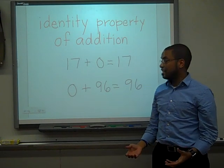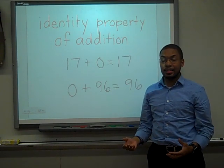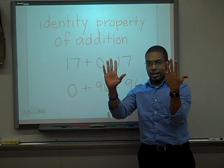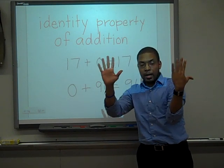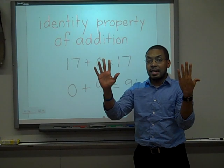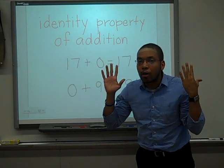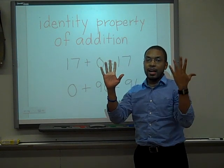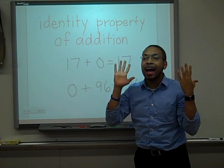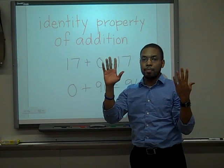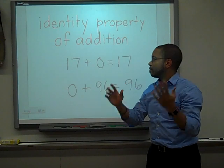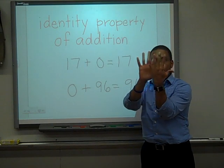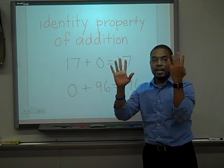The identity property of addition. When you see the direction of my hands, my thumbs are going in the same direction — they're identical if I put them right over one another. The identity property of addition says that if I add 0 to an addend, I'll get a sum of the addend. So if I add 0 to a number, I'll get the same number as the answer. 17 plus 0 equals 17.